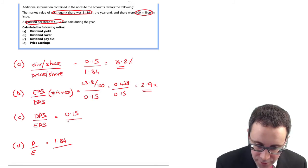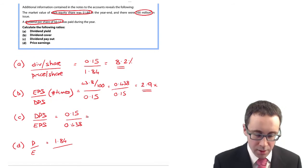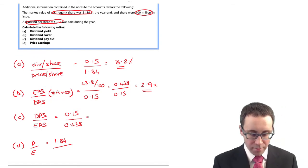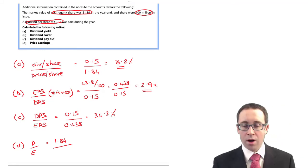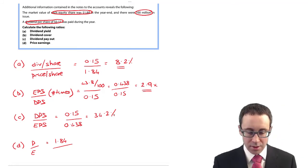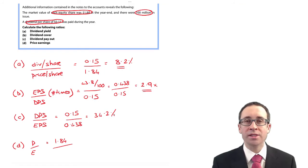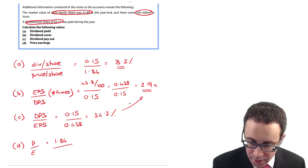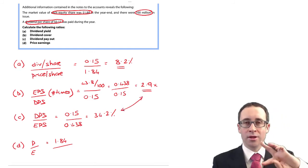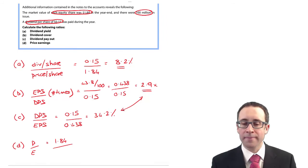And then your dividend payout rate. 0.15 divided by 0.438 multiplied by 100% is 34.2%. So we are paying out 34.2% of our earnings. Hopefully you can just see the link between the two. The dividend cover and the dividend payout are just the reciprocal of each other.